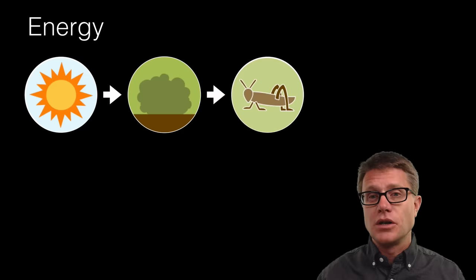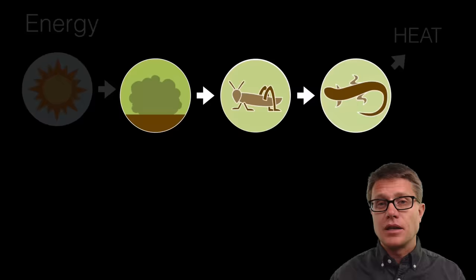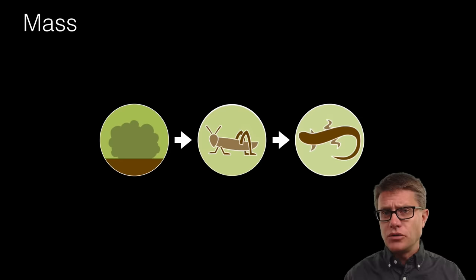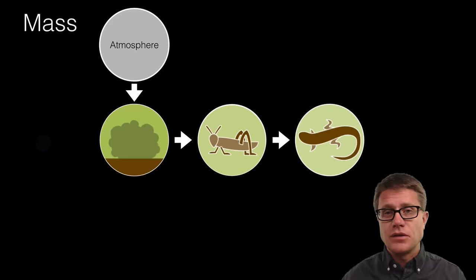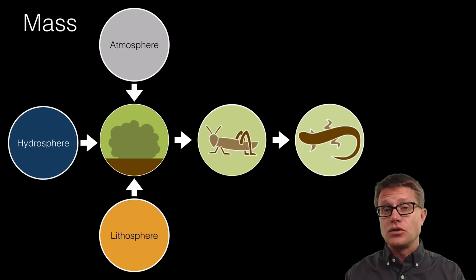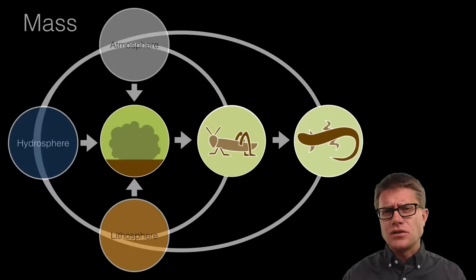And so the energy on our planet, remember, starts in the sun, moves through producers to consumers, other consumers and eventually is lost as heat. But as we move to matter everything on the planet is conserved. There is no sun anymore. And so how do the producers get the nutrients that they need? It is from their environment. From the atmosphere, from the hydrosphere, from the lithosphere. How do consumers get the matter they need? By eating plants or eating consumers that ate plants. How does the matter go back into the environment again? Through these biogeochemical cycles.